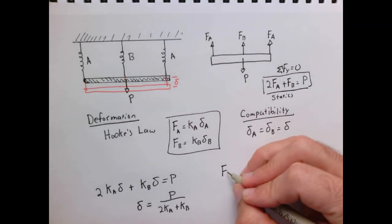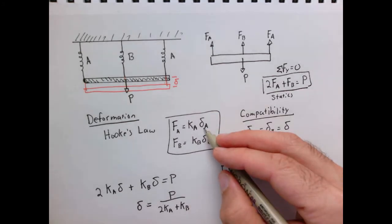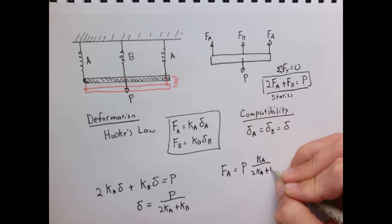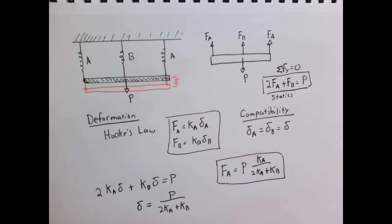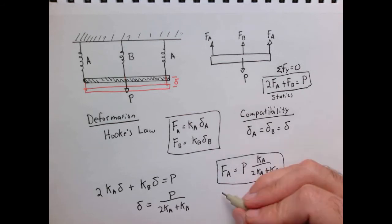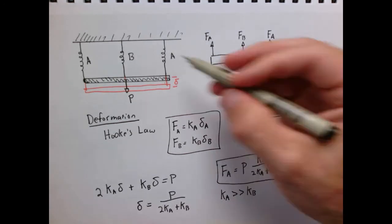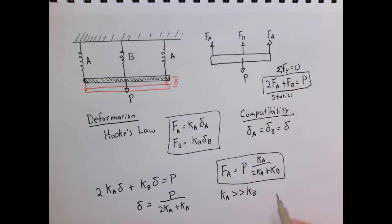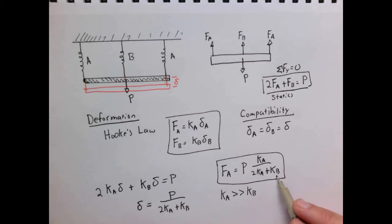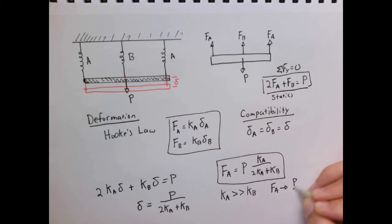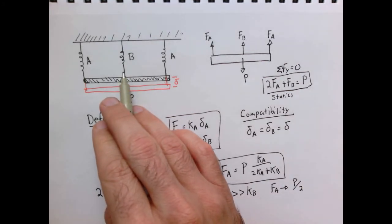This now allows us to solve for the force in spring A — substituting back into the spring law gives F_A as some fraction of the known load P. There are two useful limits to consider. First, if k_A >> k_B — A is much stiffer than B, like steel versus a rubber band — then we get approximately k_A / (2·k_A), so F_A approaches P/2. It's as though spring B doesn't even exist.